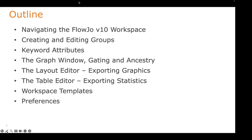We'll get into the graph window, drawing gates, and looking at ancestry. Then from there, we'll look at the layout editor where we'll create images and export graphical reports. We'll take a look at the table editor and then saving workspace templates — it's a good way to make your future analyses go much quicker using templates. And then finally, we'll look at customizing FlowJo a little bit by changing preferences.